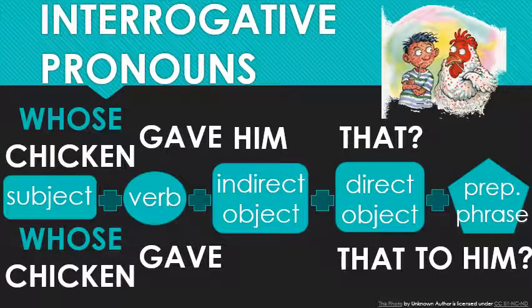Let's look at the possessive. 'Whose chicken gave him that disease?' Whose is being used as an adjective, so it follows the rules of whatever part of speech the noun is. Here, chicken is the subject, and whose is attached to chicken — it's part of that subject phrase — so it's not going anywhere. Nice and simple.